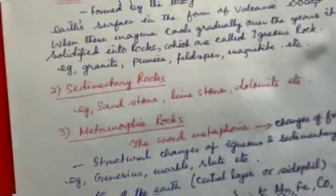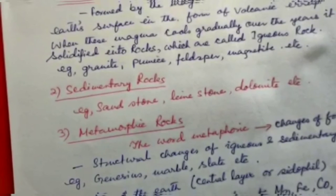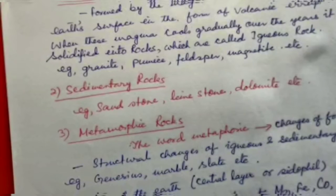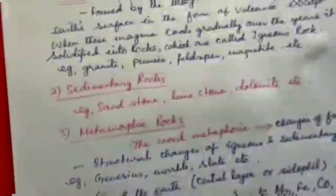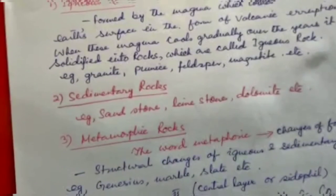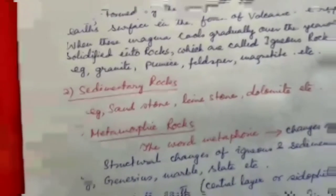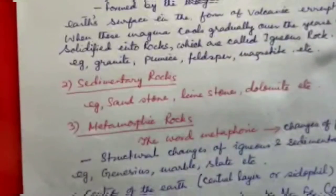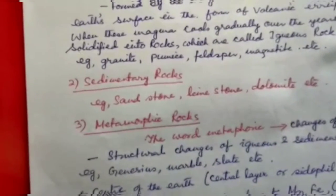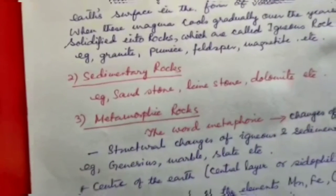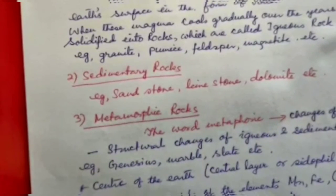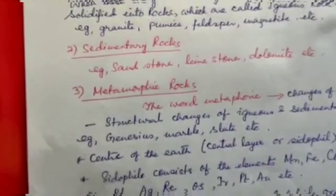Sedimentary rocks: examples are sandstone, limestone, dolomite, etc. The third type is metamorphic rocks. These rocks are believed to be formed by structural changes of igneous and sedimentary rocks due to high temperature and pressure. The word metamorphic implies change of form. Examples are gneiss, schist, marble, slate, etc.